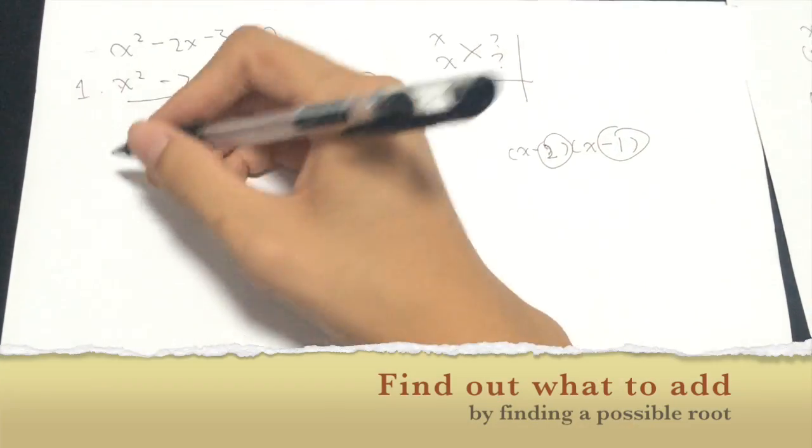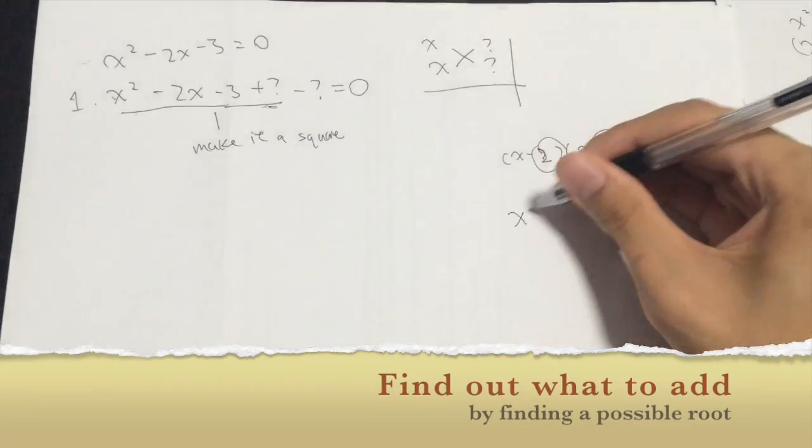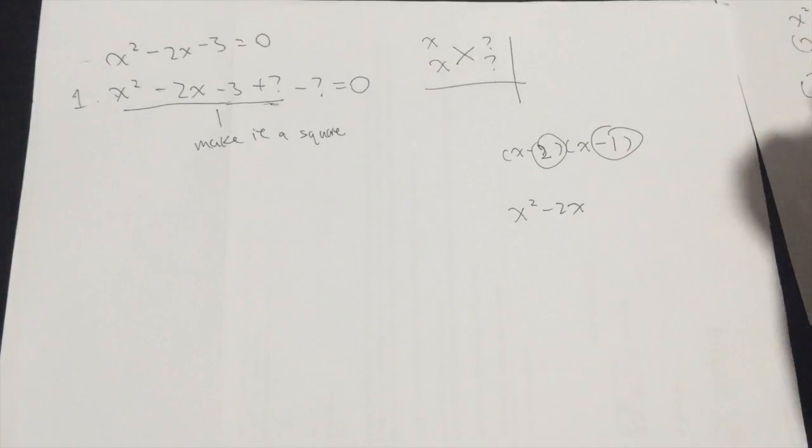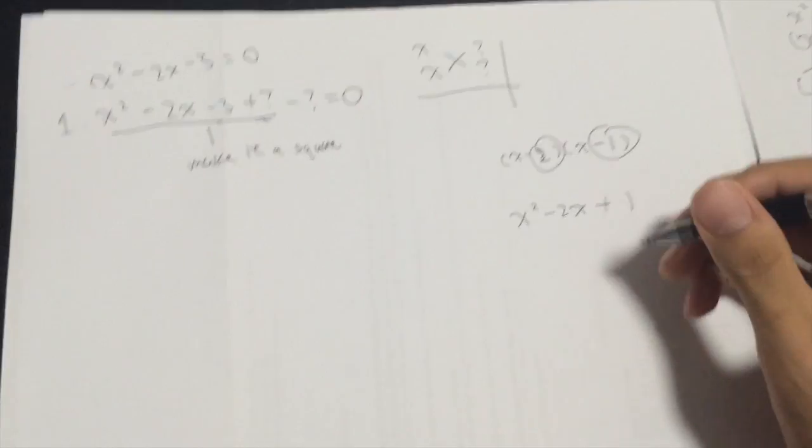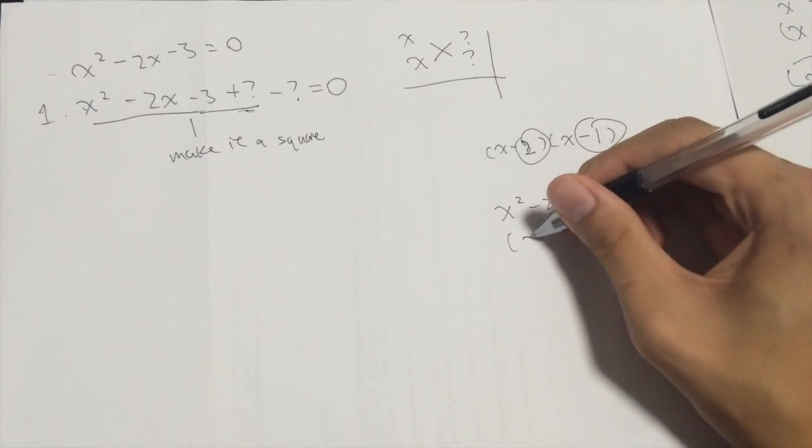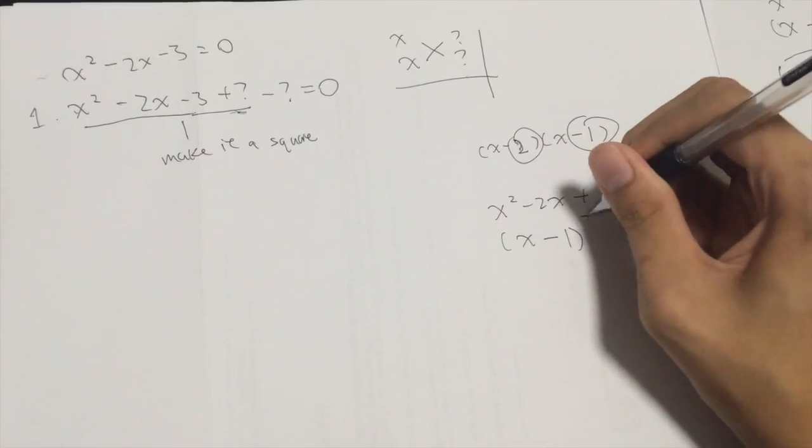Okay, so whenever you see x squared minus 2x, what's the most common number that comes next? It will be plus 1 to be able to make it a square because this thing would originate from this.